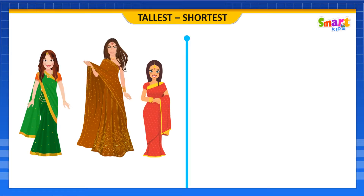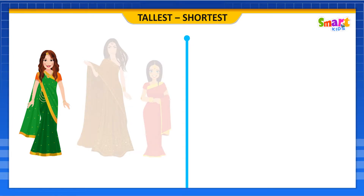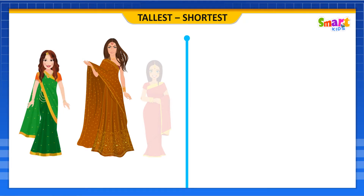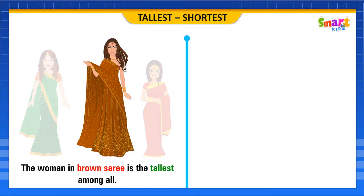Look at these women wearing colorful saris. The woman in green saree is taller than the woman in red saree. The woman in brown saree is taller than the woman in green saree. Thus, the woman in brown saree is the tallest among all.